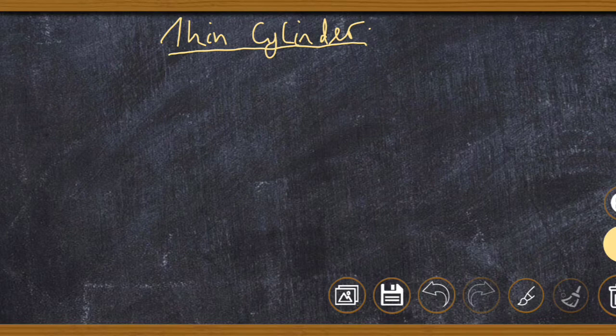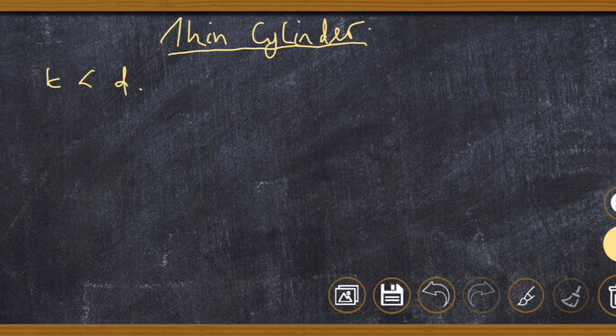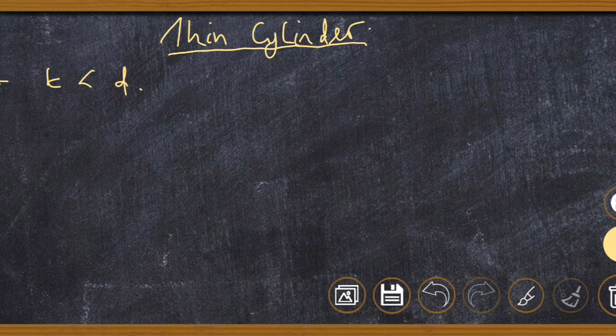For a cylinder to be assumed as a thin cylinder, it must satisfy certain conditions. First, the thickness of the cylinder compared to the diameter must be less — that means the thickness must be less than the diameter. Second, the cylinder must be subjected to uniformly distributed stress, meaning the stress will be assumed to be uniformly distributed across the thin cylinder.